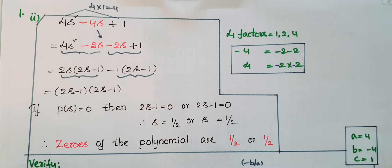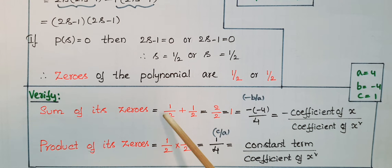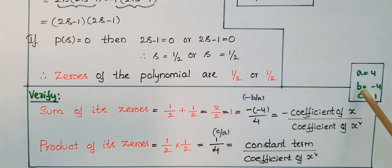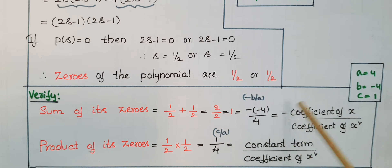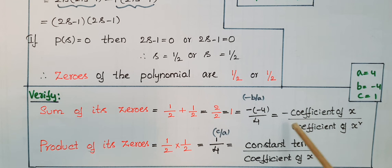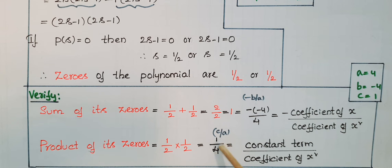The zeros of this polynomial are both 1/2. Sum of zeros = 1/2 + 1/2 = 1. Here -b/a = -(-4)/4 = 1. So sum equals -b/a, verified. Product of zeros = 1/2 × 1/2 = 1/4. And c/a = 1/4. So product of zeros equals c/a, verified.